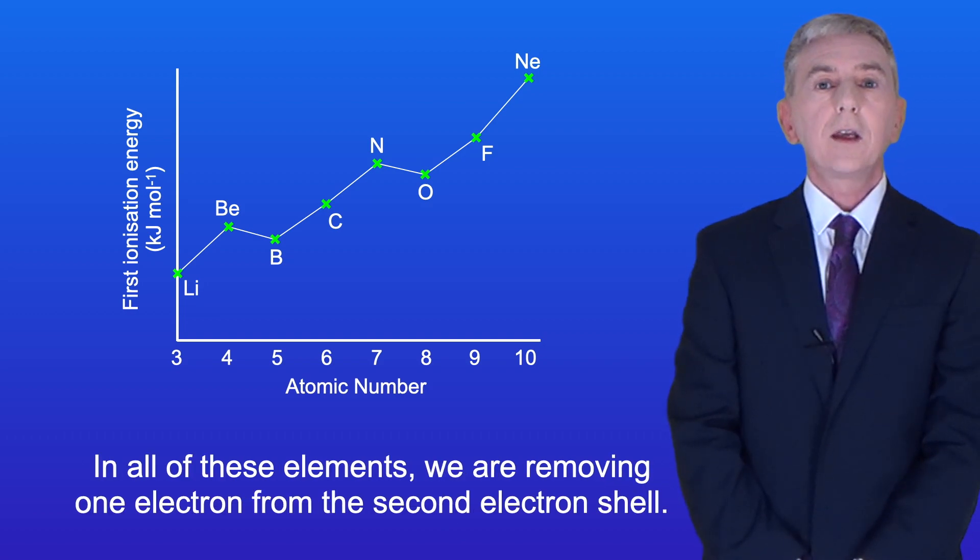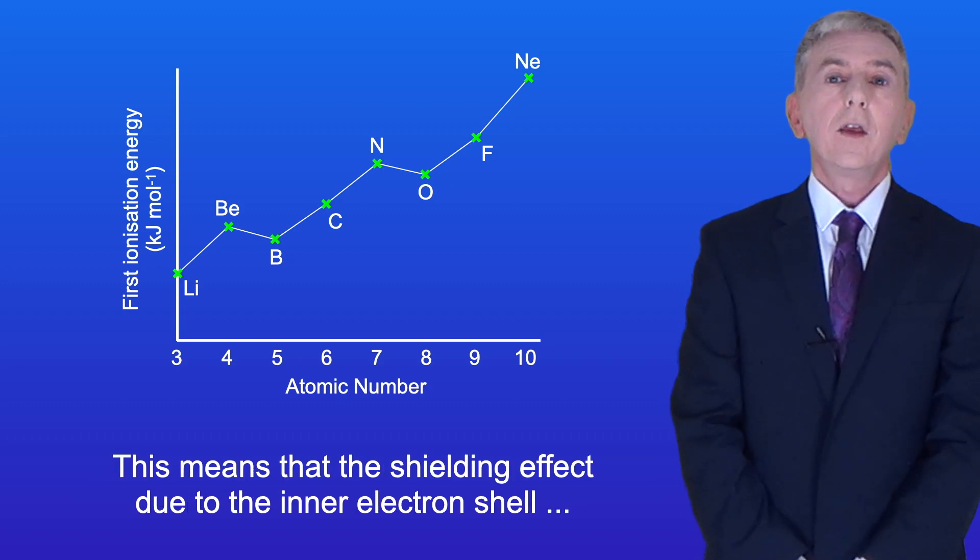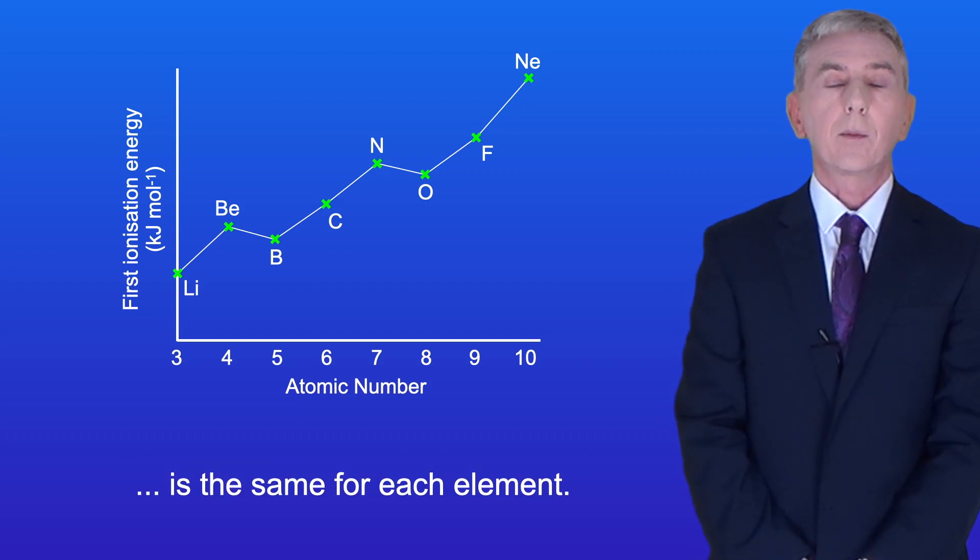Now in all of these elements we're removing one electron from the second electron shell. This means that the shielding effect due to the inner electron shell is the same for each element.